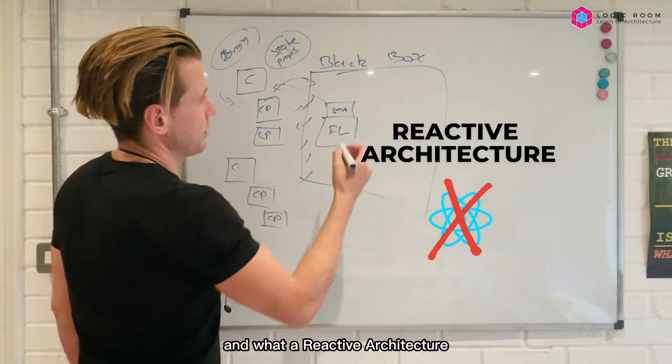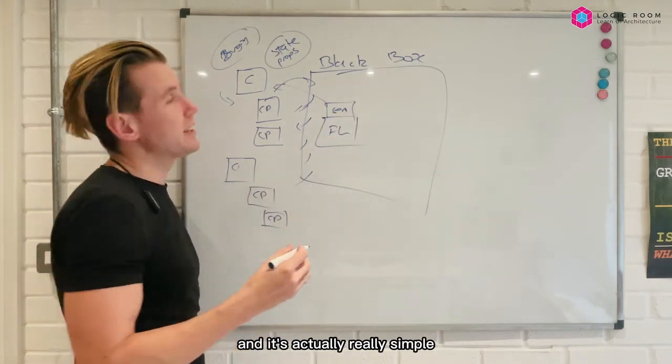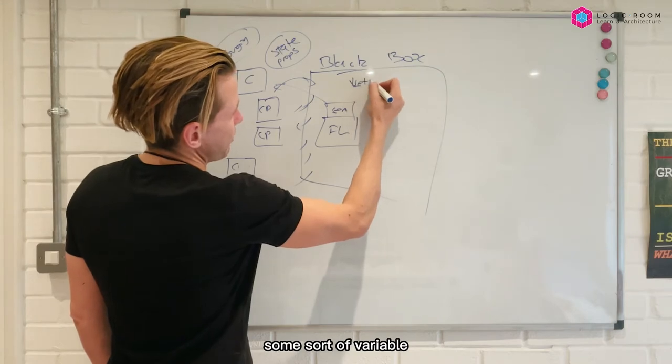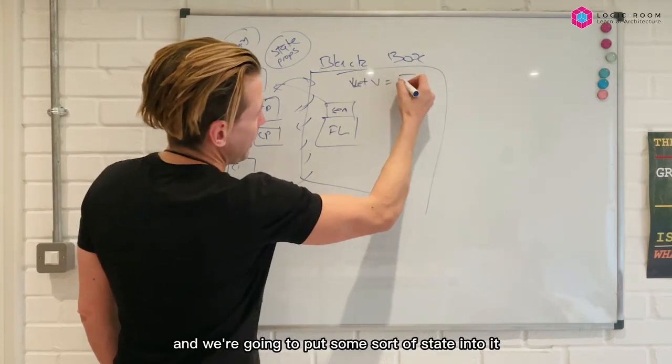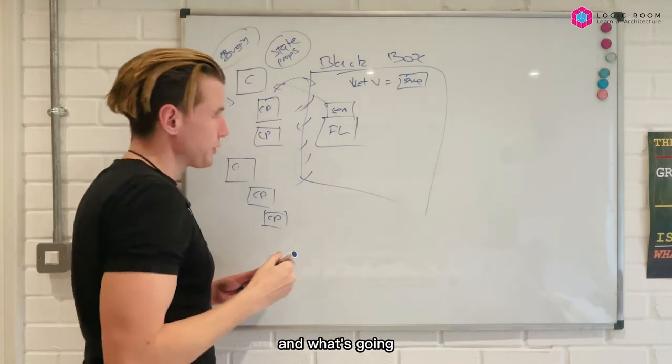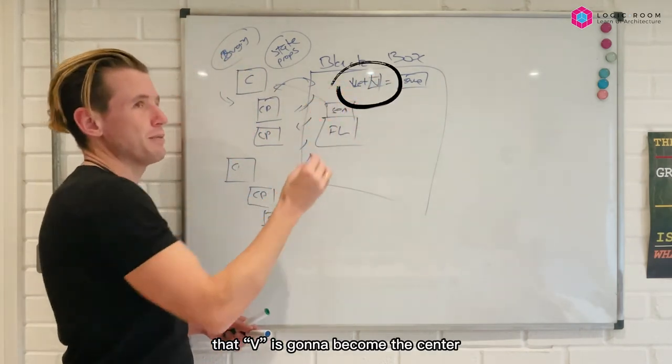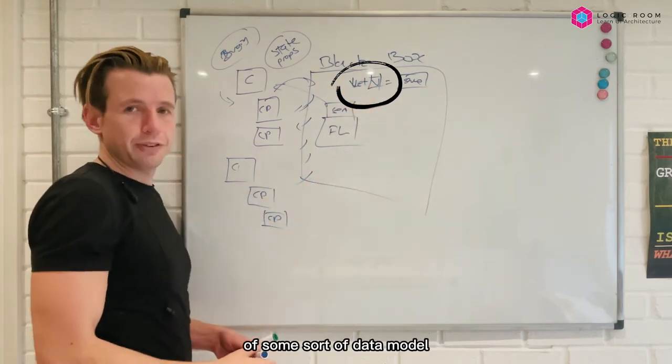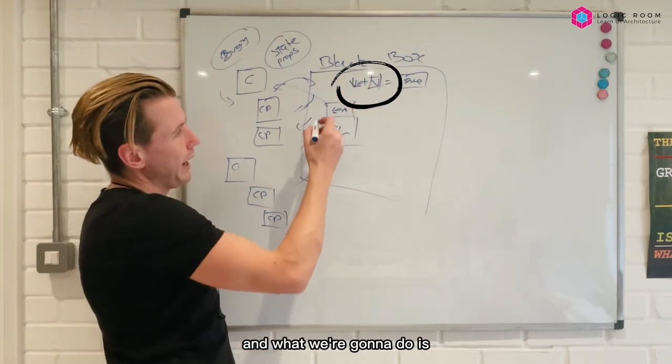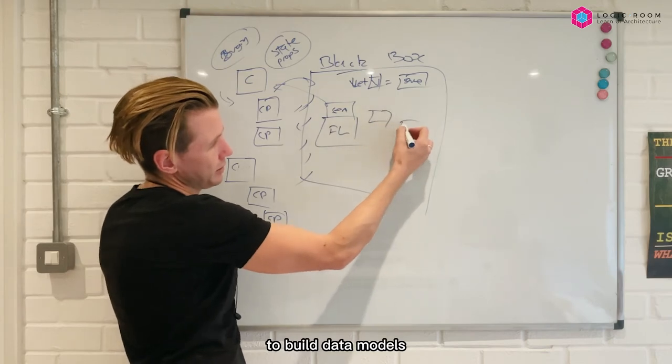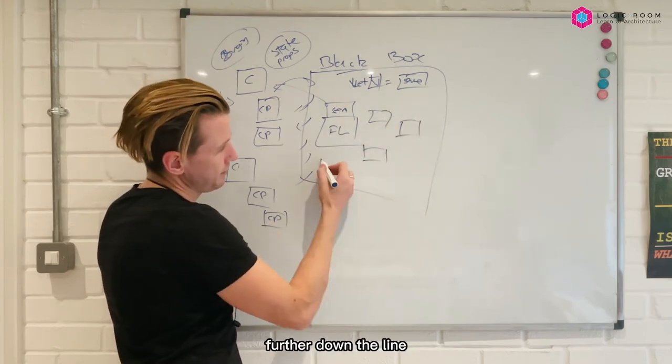And what a reactive architecture fundamentally says, and it's actually really simple, is it just says we're going to have some sort of variable, let v equals, and we're going to put some sort of state into it. And what's going to happen is that v is going to become the center of some sort of data model, and what we're going to do is we're going to begin to build data models further down the line.